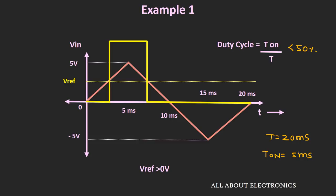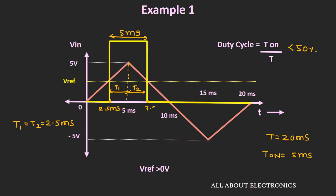The on-time should be equal to 5 ms. Since the triangular wave is symmetric, the output waveform will also be symmetric around the 5 ms time, so t1 and t2 are equal — each equal to 2.5 ms. This means the reference voltage crossing occurs at t = 2.5 ms and t = 7.5 ms. We need to find the input voltage at t = 2.5 ms.